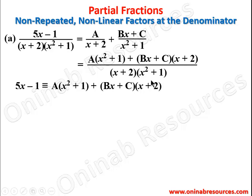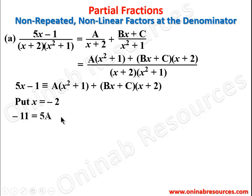Putting x = −2: the left side gives 5(−2) − 1 = −11. On the right side, (−2)² + 1 = 5, so we have 5A, and (−2 + 2) = 0 eliminates B and C. So −11 = 5A, and dividing both sides by 5 gives A = −11/5.